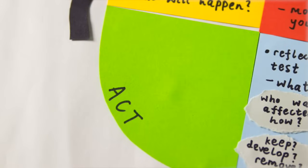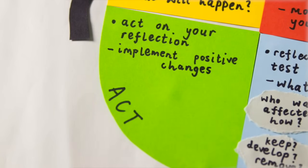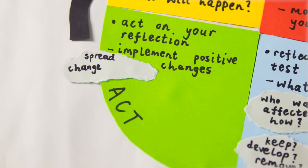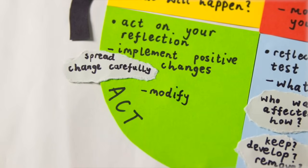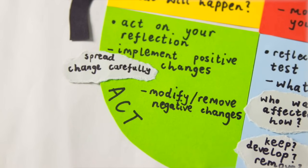The act stage is responding to your reflection. You need to decide whether to spread, stop, or improve the changes. If it was successful, maybe carefully spread it to more patients little by little. Perhaps it was beneficial, but there are areas that need some work. Maybe it had negative results and needs to be removed.